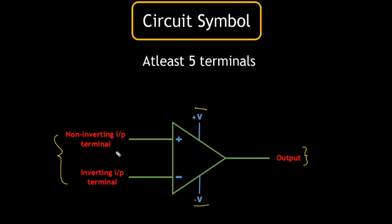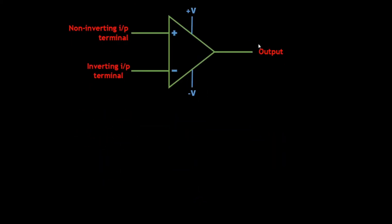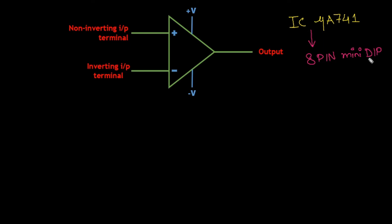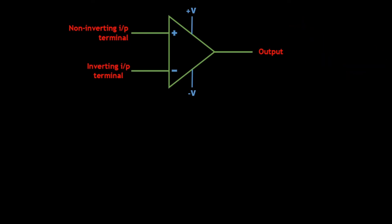The input terminals are of 2 types. One is the non-inverting input terminal, denoted by a plus symbol, and the other is the inverting input terminal, denoted by a negative symbol. The commercial IC we use in our labs is the IC MuA741 — an 8-pin mini DIP (dual inline package) IC.